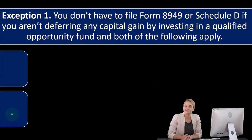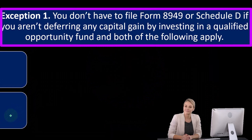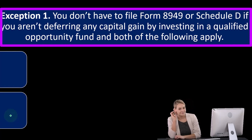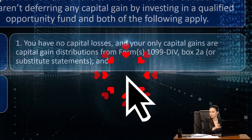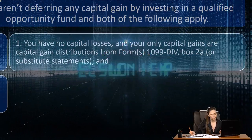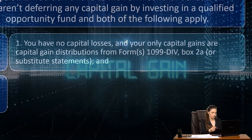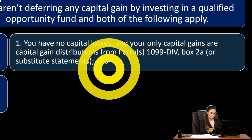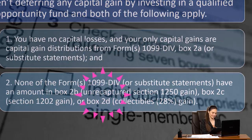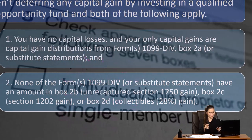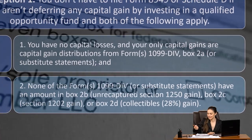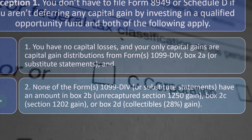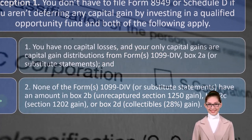Exception one: you don't have to file Form 8949 or Schedule D if you aren't deferring any capital gain by investing in a qualified opportunity fund, and both of the following apply. One: you have no capital losses and your only capital gains are capital gain distributions from Forms 1099-DIV, box 2A, or substitute statements. And two: none of the Form 1099-DIV or substitute statements have an amount in box 2B for recaptured Section 1250 gain, box 2C Section 1202 gain, or box 2D collectibles 28% gain.